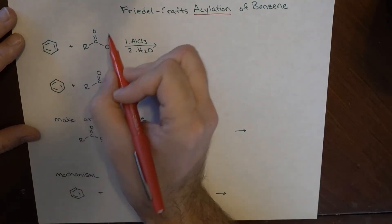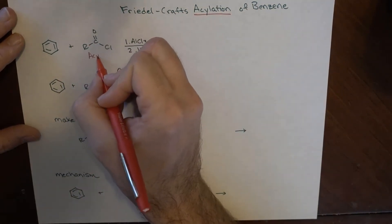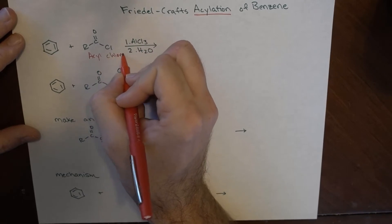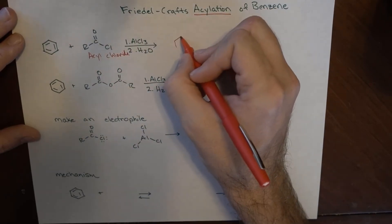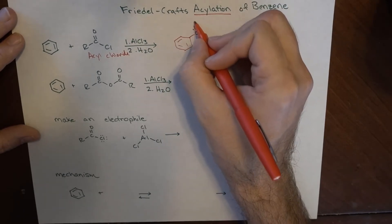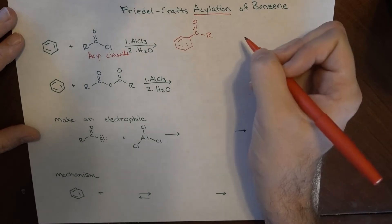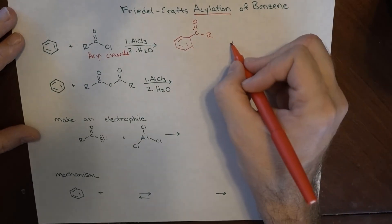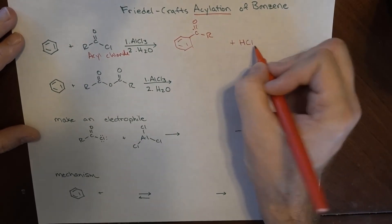So that means that if we have our benzene and some acyl chloride, what we end up forming is this kind of species here and HCl is the other thing that ends up coming off.